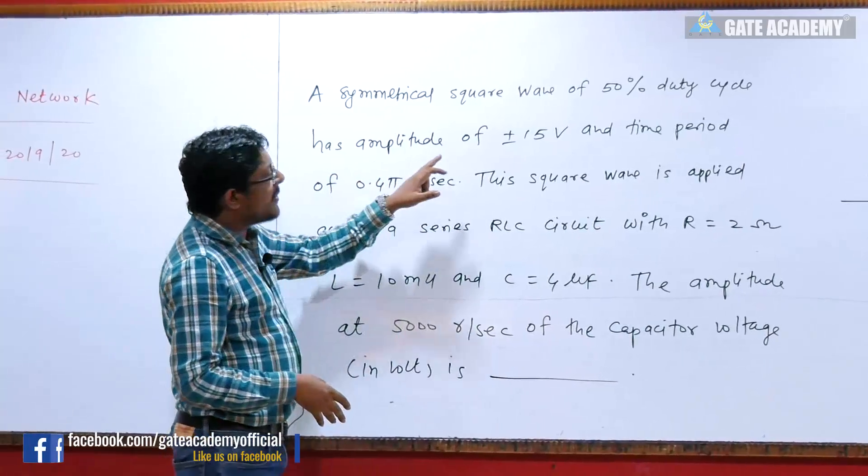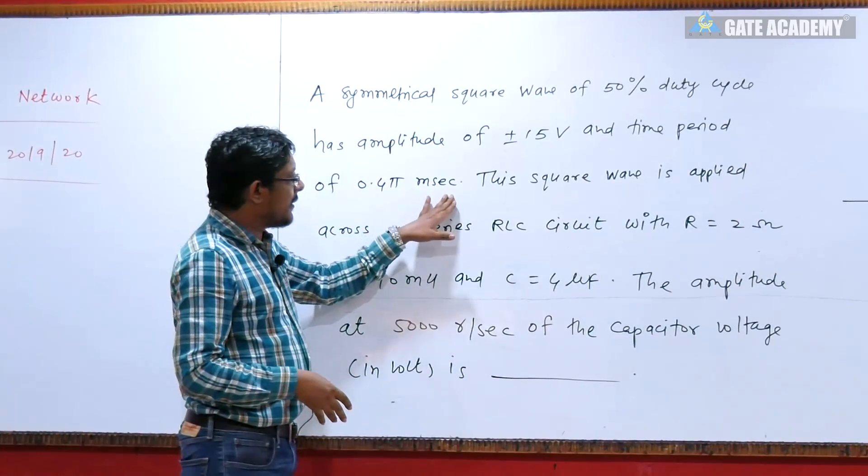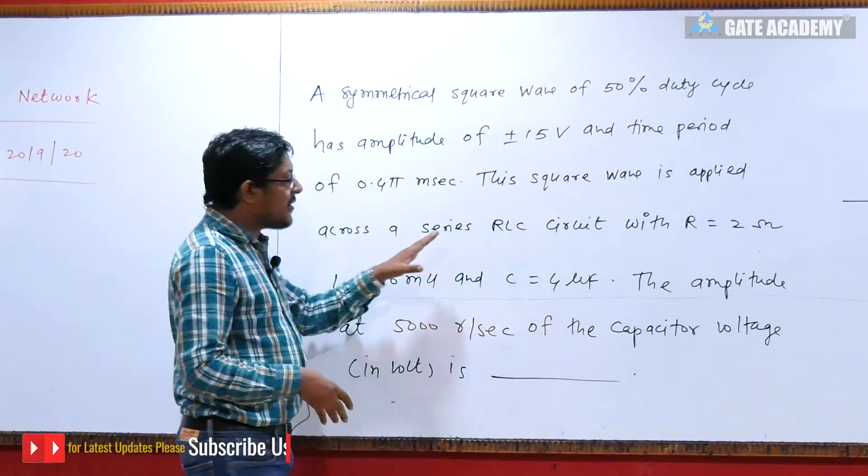50% duty cycle, amplitude of plus minus 15 volt and time period of 0.45 millisecond. This square wave is applied across a series